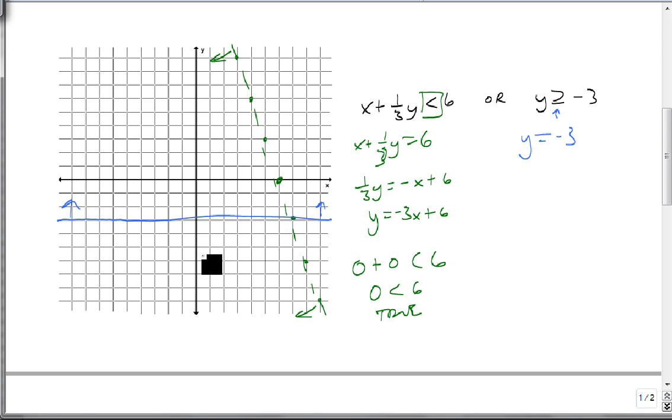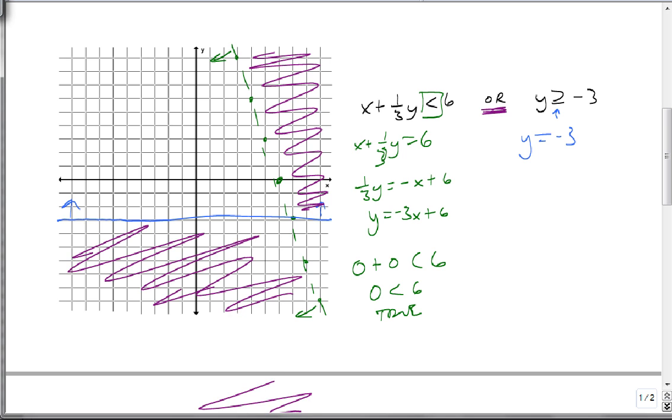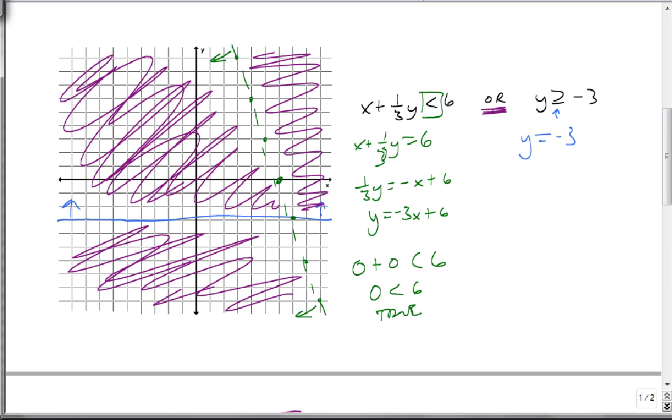So again we have 1, 2, 3, 4 regions to look at. But this time we're combined by the word 'or'. That means if either wants to shade it, it's part of the answer. So this region gets shaded, this region gets shaded, and this region that they both want also gets shaded. With an 'or', we end up with 3 of the 4 regions shaded. The only region that's not shaded is the one neither wants.